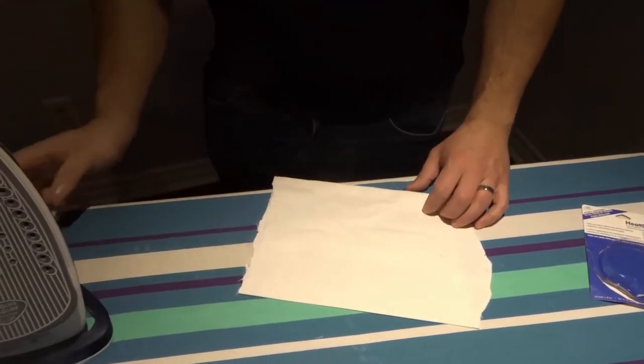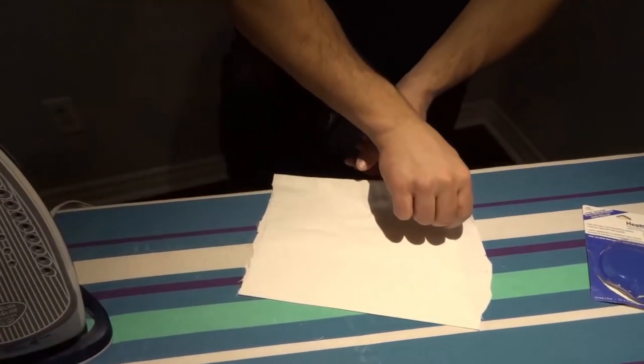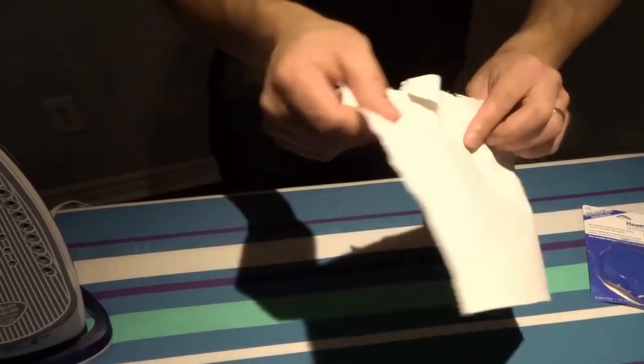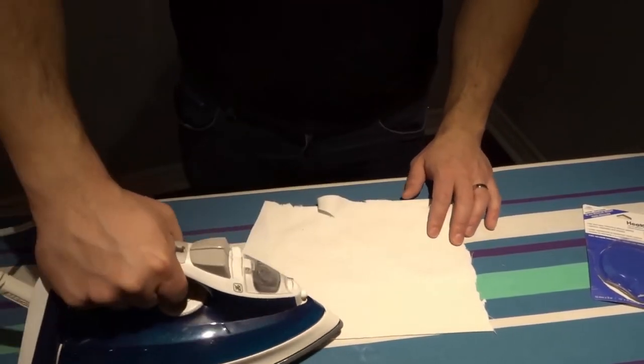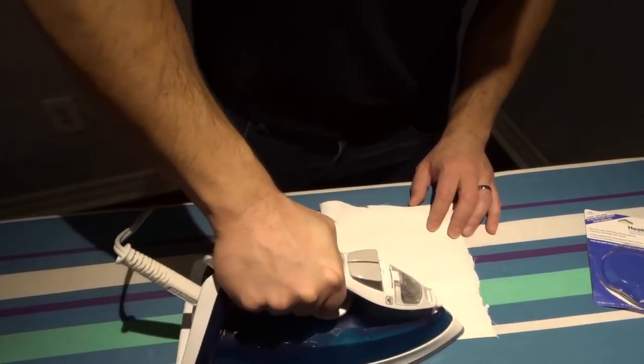So we did that side. Okay now we're going to carefully flip it over, not ruining the hemline or the tape in position, and we're going to iron on the other side like this. Once again doing the same thing, just like that.